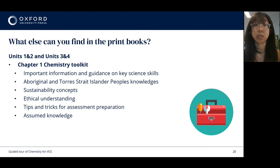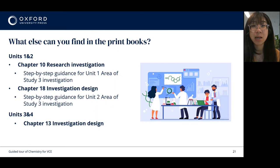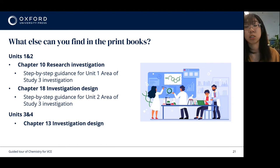The chapters in Chemistry for VCE cover all areas of study, including unit one area of study three, unit two area of study three, and unit four area of study three. We've got chapter 10, which is the research investigation chapter. This provides a step-by-step guide for students to conduct research on one of those four investigation topics, including how to choose a topic, how to evaluate resources, how to organise information and connect their ideas, and how to reference.